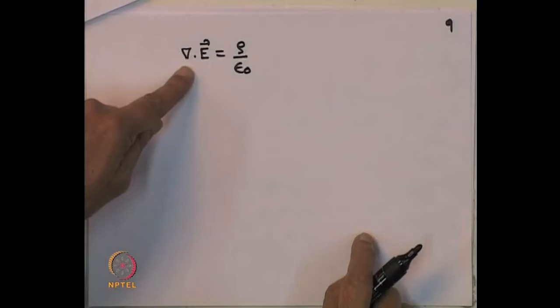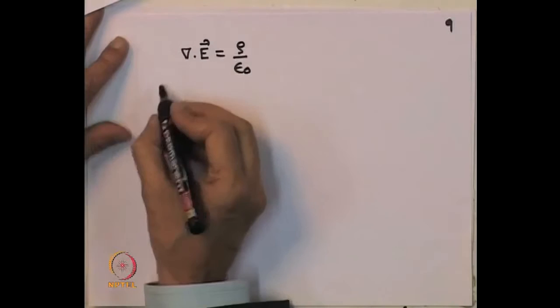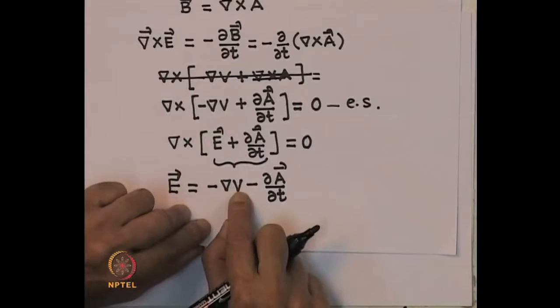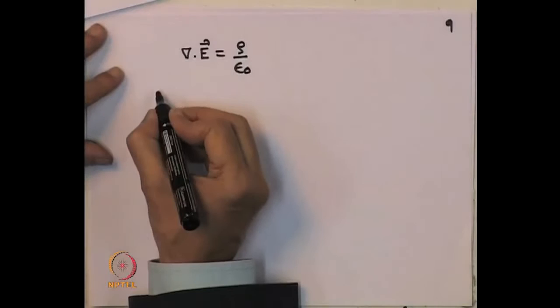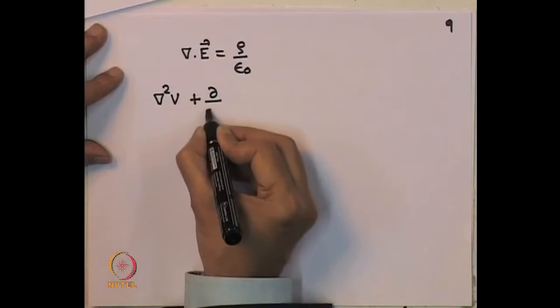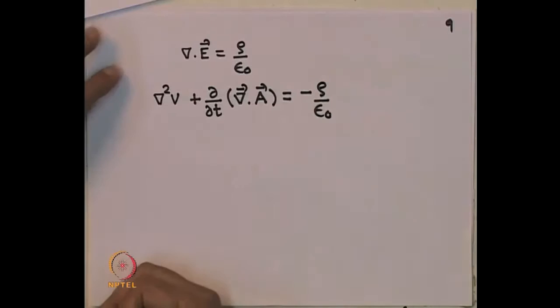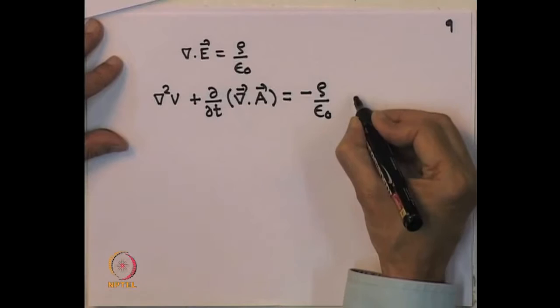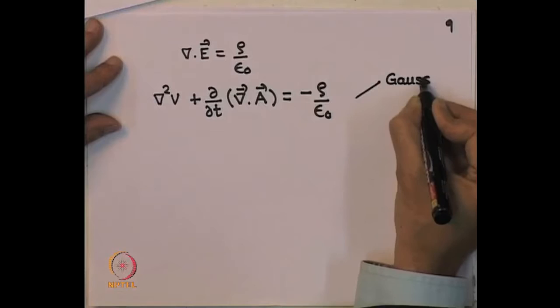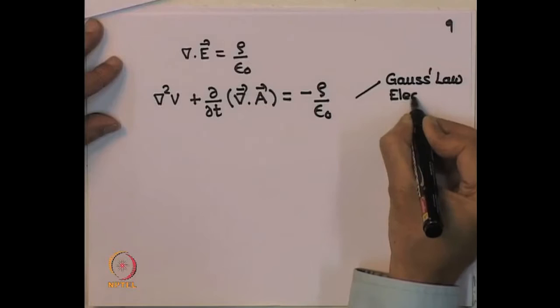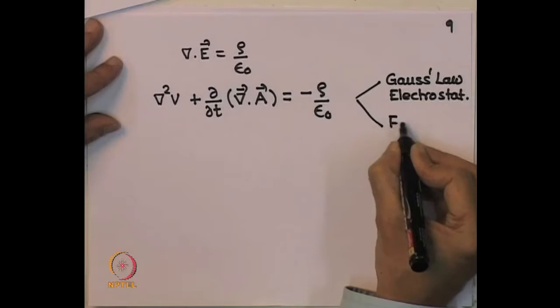In vacuum, del dot E equals rho/epsilon_0. Rewriting del dot E in terms of potentials: del dot E equals minus del squared V minus d/dt(del dot A). So I can write del squared V plus d/dt(del dot A) equals minus rho/epsilon_0. This single equation combines Gauss's law of electrostatics and Faraday's law together.